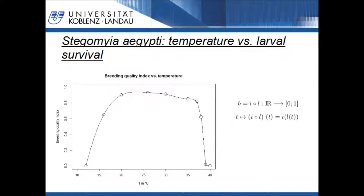By composing the given functions, we get a third function describing the relation between the grade of breeding quality in relation to the temperature. The composed function is visualized on this slide. The shape of this function is similar to that of the developed spline function, because of the linear relationship described previously. Only the scale of the y-axis changes — the maximum value is now 1, in contrast to a value of 100 in the original spline function.